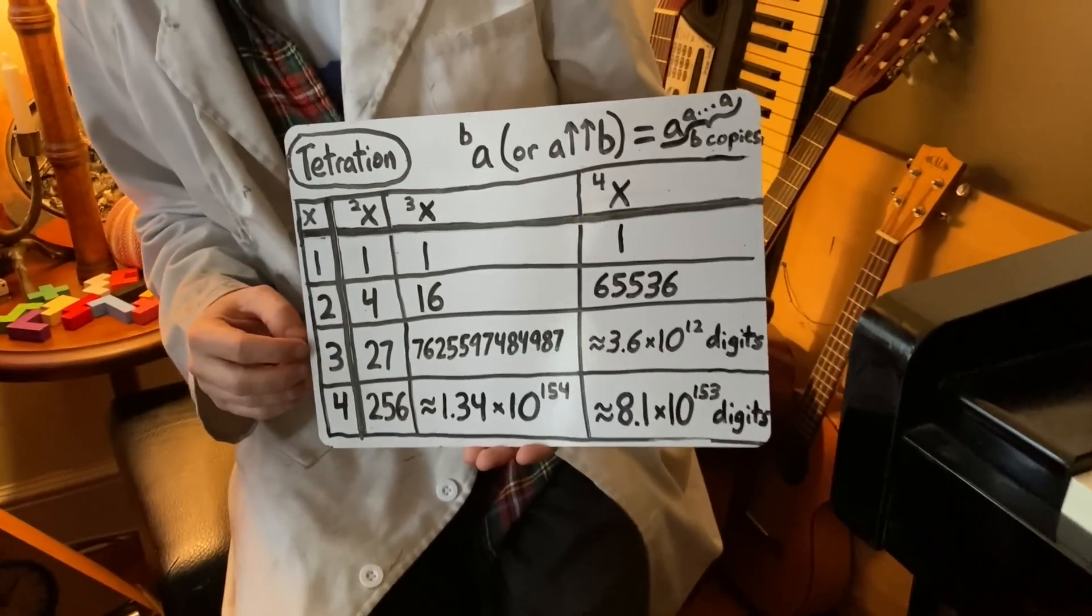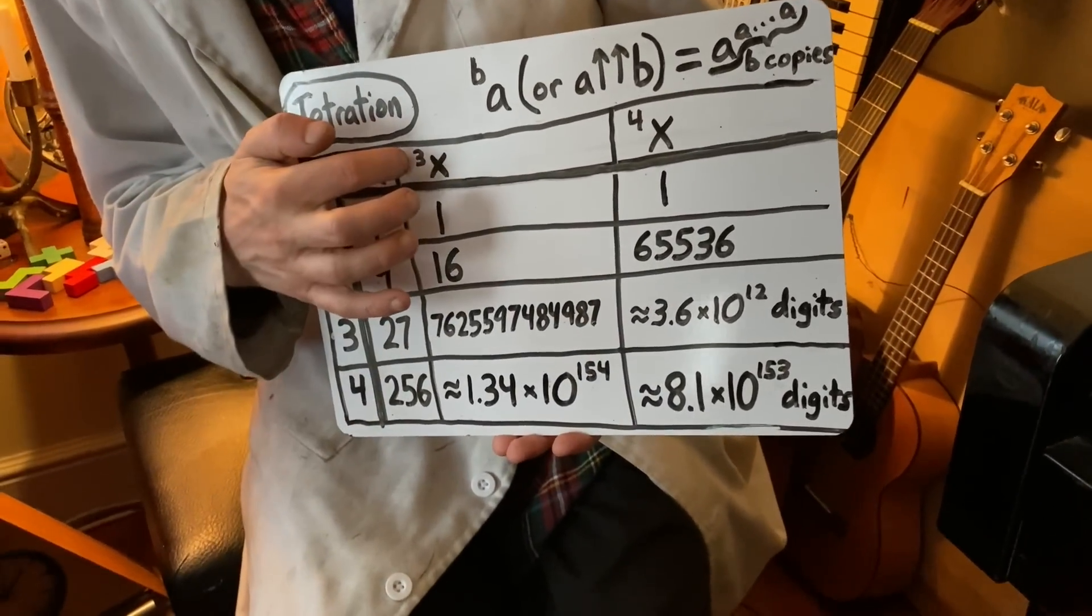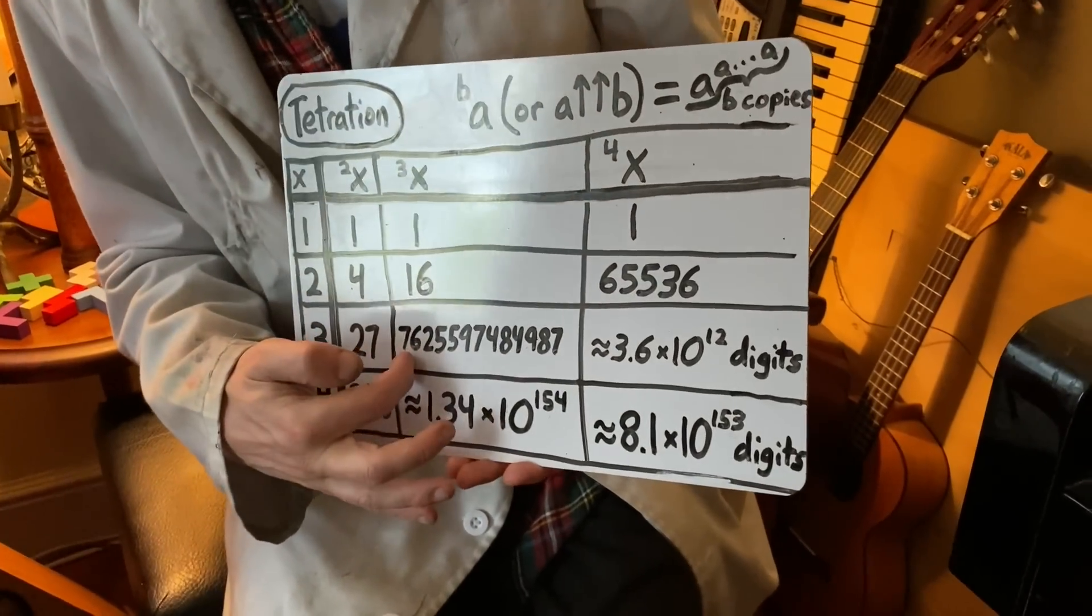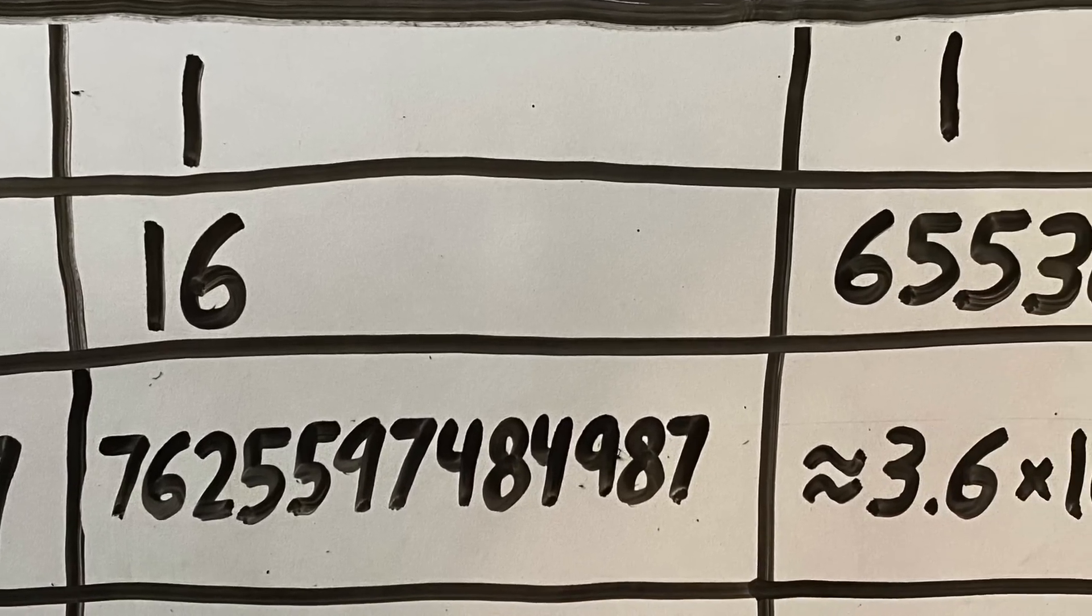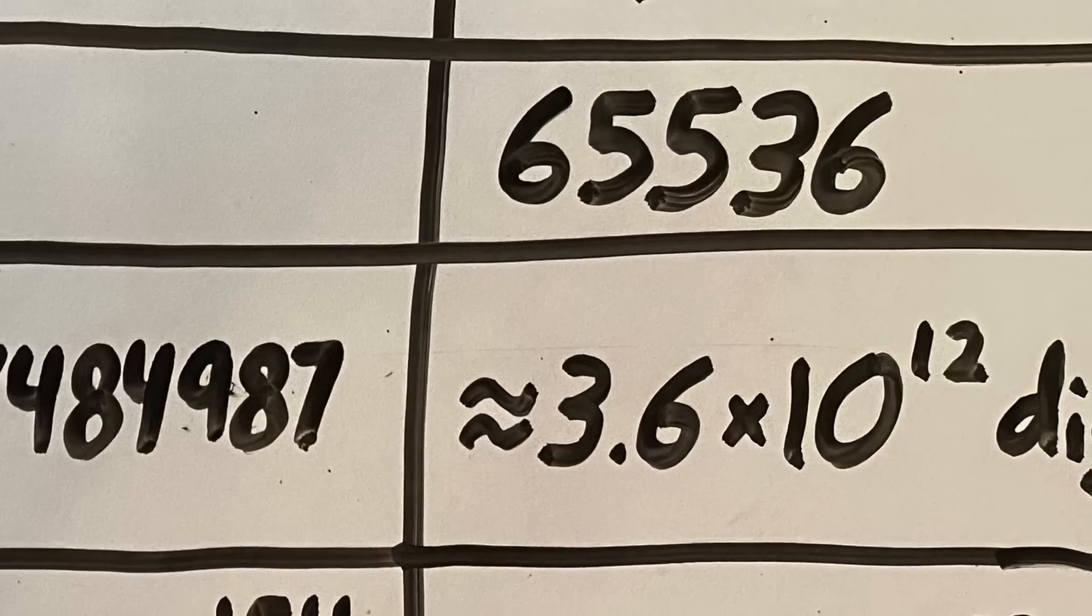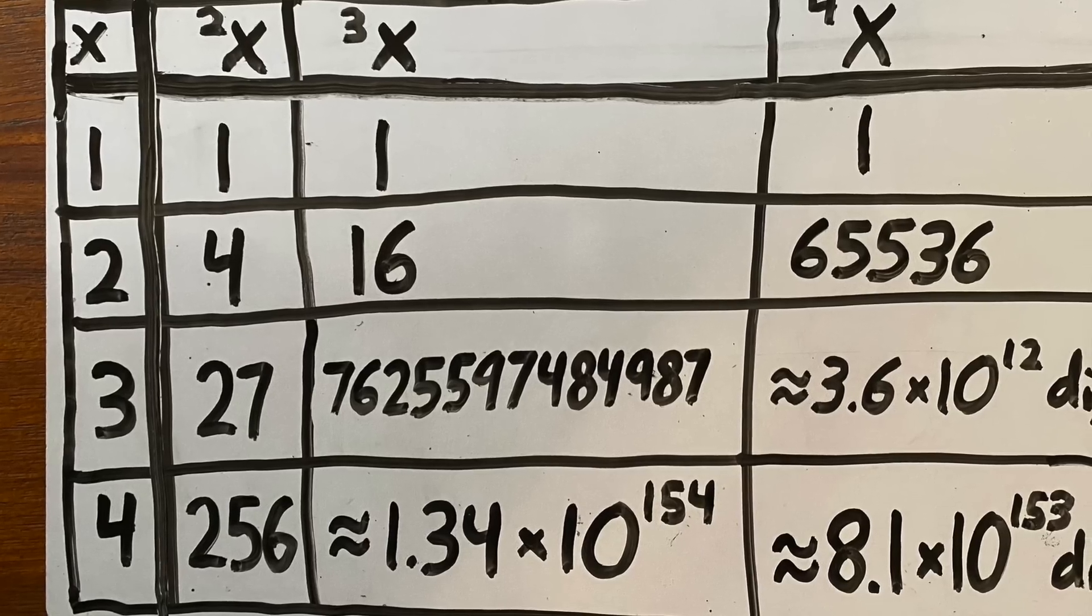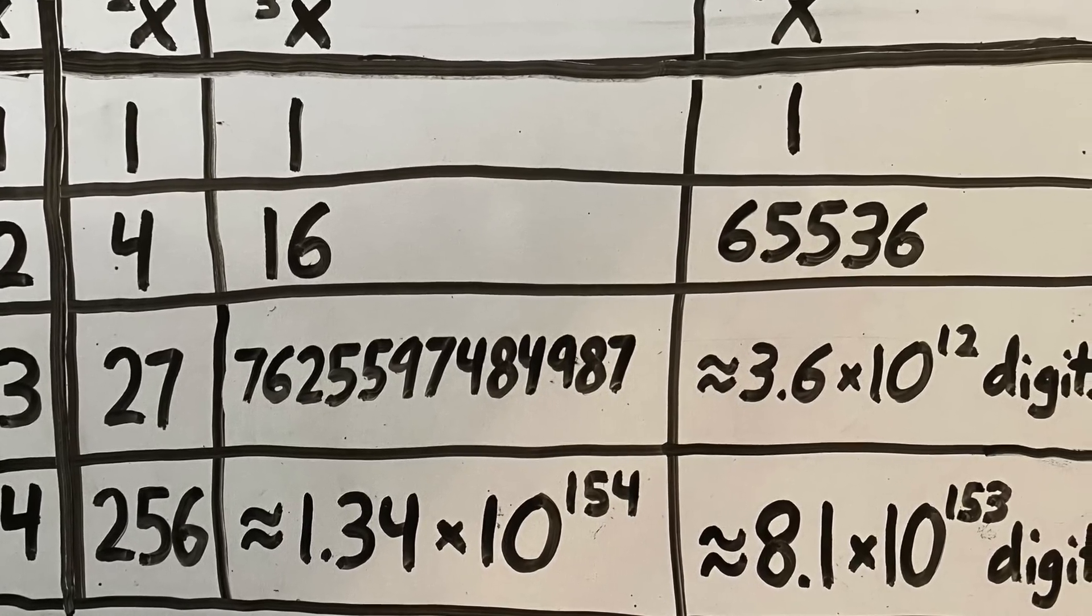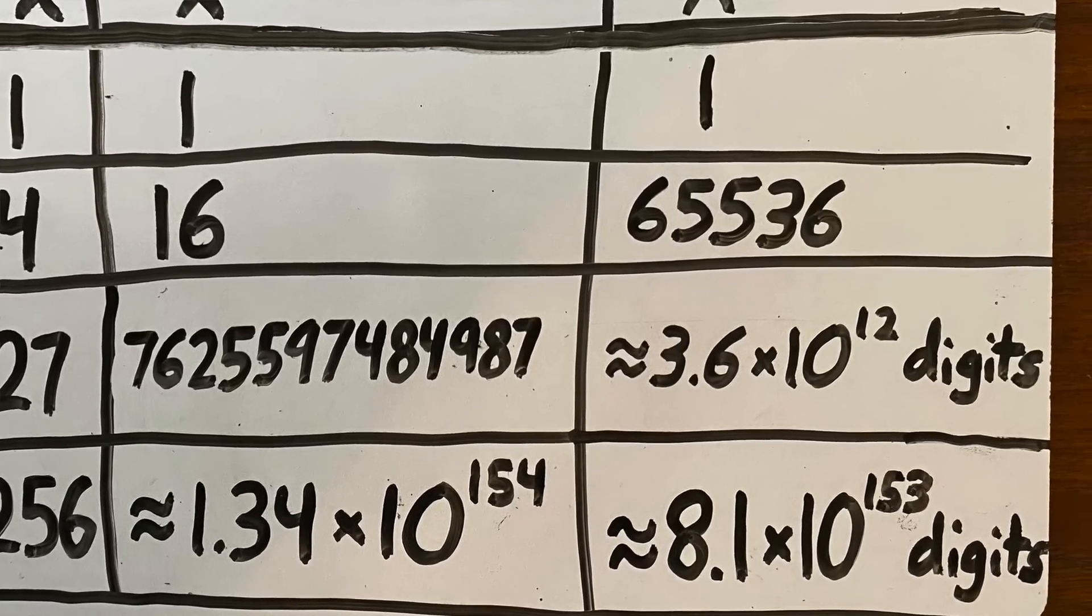Three tetrated to two is 27. Three tetrated to three, which would be three to the 27th power, is that number. And three tetrated to four has that many digits. Four tetrated to two we are already at 256. Four tetrated to three is bigger than the number googol, and four tetrated to four is bigger than the number googolplex.